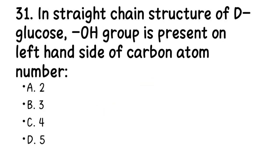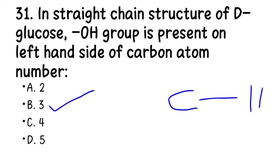Number 31. In the straight-chain structure of D-glucose, the OH group is present on the left-hand side of carbon atom number — . If you draw the glucose structure from carbon 1 to 6, you can easily get the answer. The right answer is 3. On carbon-3, the OH is on the left side while hydrogen is on the right.